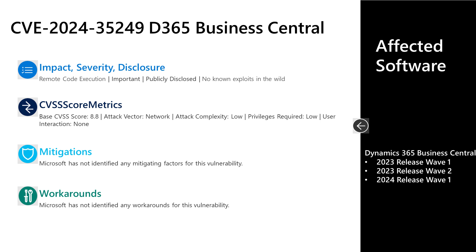Next, I'll talk to a vulnerability in Dynamics 365. This is CVE-2024-35249. This is an important remote code execution vulnerability. The attack vector is over the network, the attack complexity is low, privileges required is low, and user interaction is none. This comes out to a CVSS base score of 8.8. There are no documented mitigations or workarounds. As far as privileges required, any authenticated attacker would be able to trigger this vulnerability — it does not require administrative or other elevated privileges. The affected software is Microsoft Dynamics 365 Business Central in three different versions: 2023 Release Wave 1, 2023 Release Wave 2, and 2024 Release Wave 1.